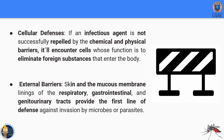The second critical defense barrier is cellular defenses. If any infectious agent is not repelled by the chemical barrier, it will encounter cells that eliminate foreign substances entering the body. The third barrier is external barriers — skin and the mucous membrane linings of the respiratory, gastrointestinal, and urinary tracts — which provide the first line of defense against invasion by microbes or parasites.